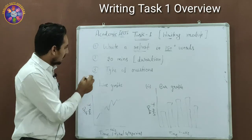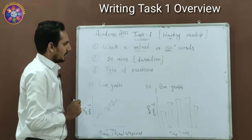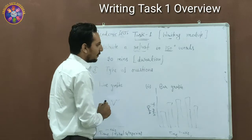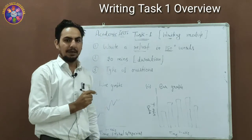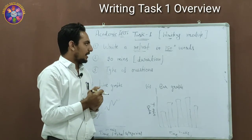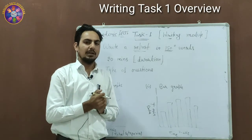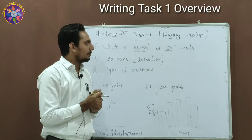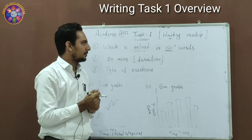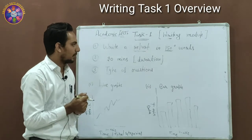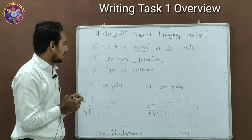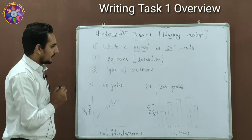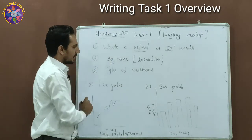In Task 1, you simply have to write a report. The word limit for this report should be not less than 150 words, but there is no upper limit. If you write less than 150 words it may deduct your score, but if you write more than 150 you are fine. For time, you are given 20 minutes total for Task 1.